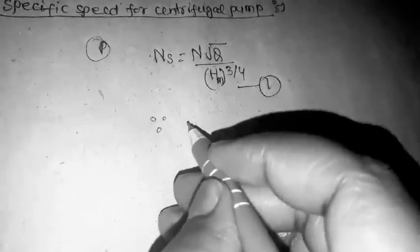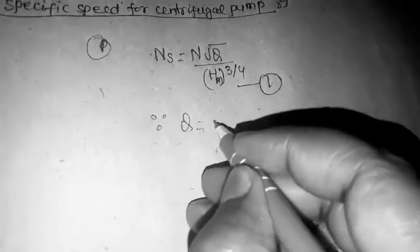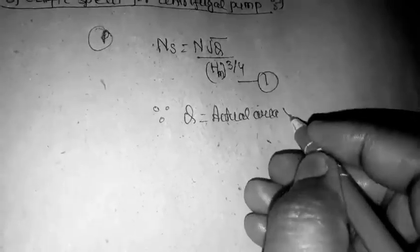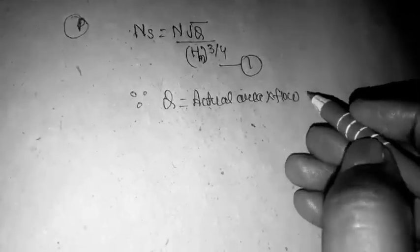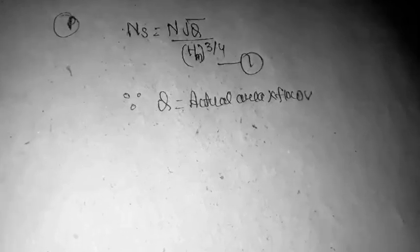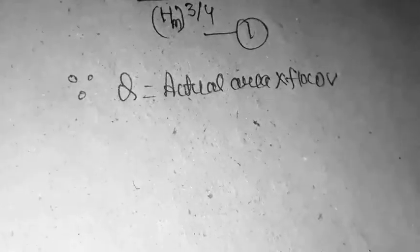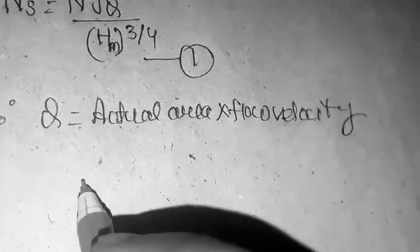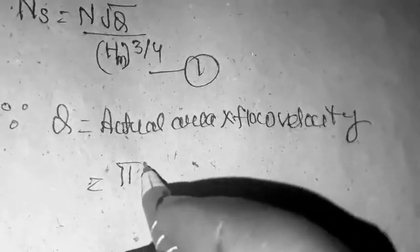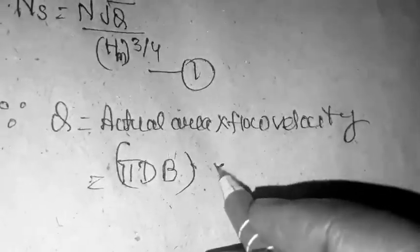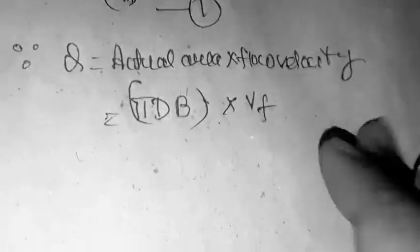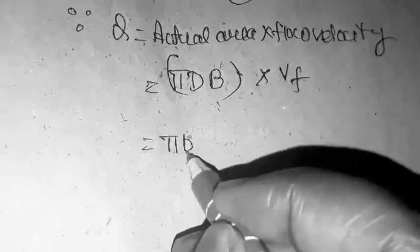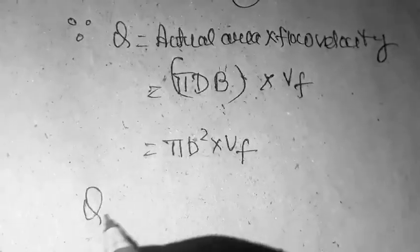Now let's see what the discharge is. Discharge Q equals actual area into flow velocity. Q equals pi D into VF, or pi D square into VF. So Q is directly proportional to D squared into VF.